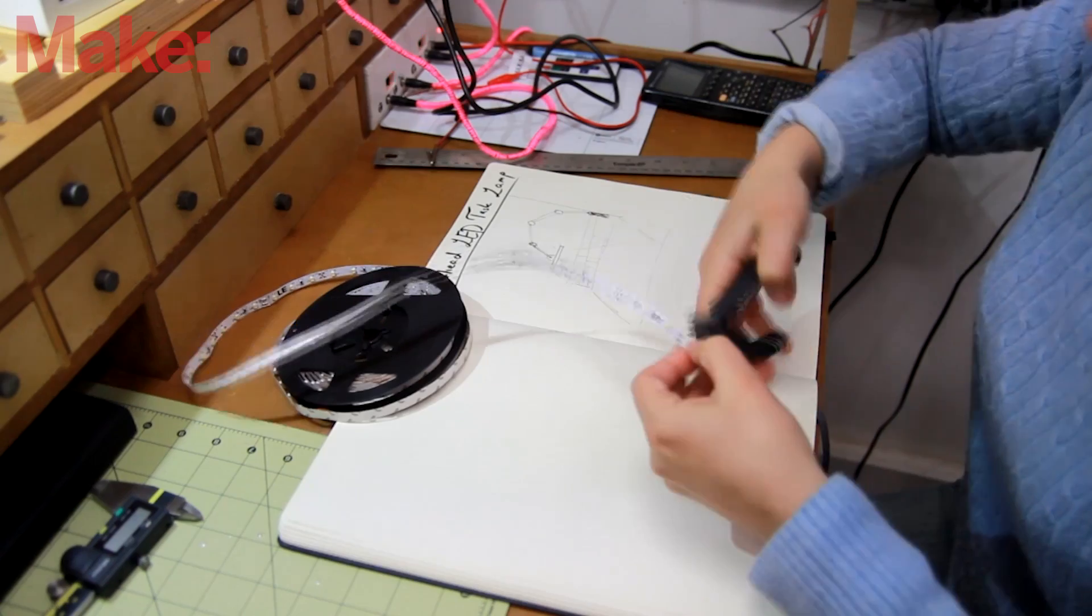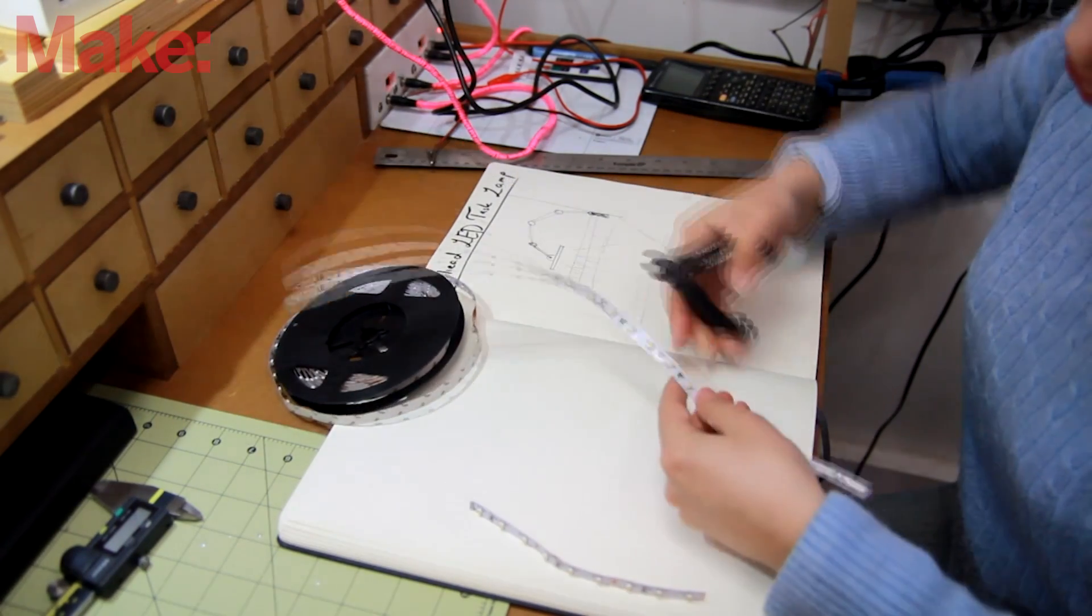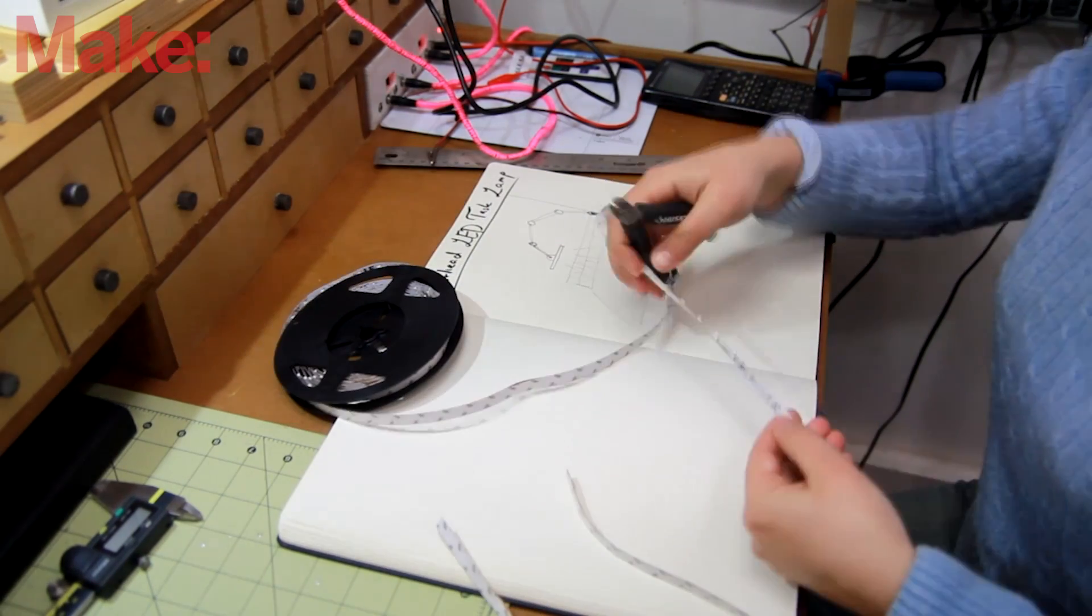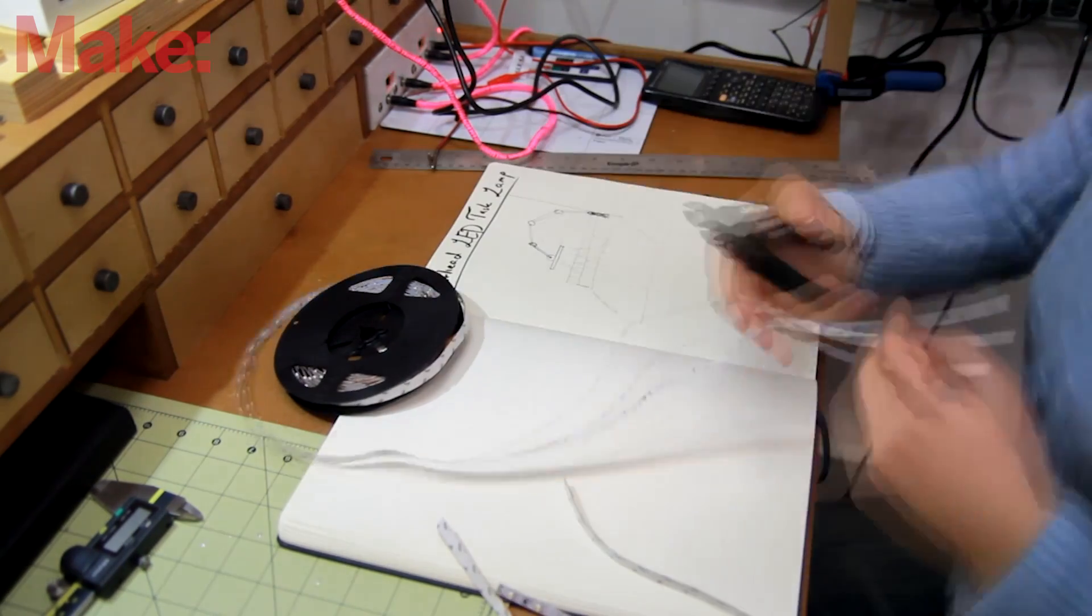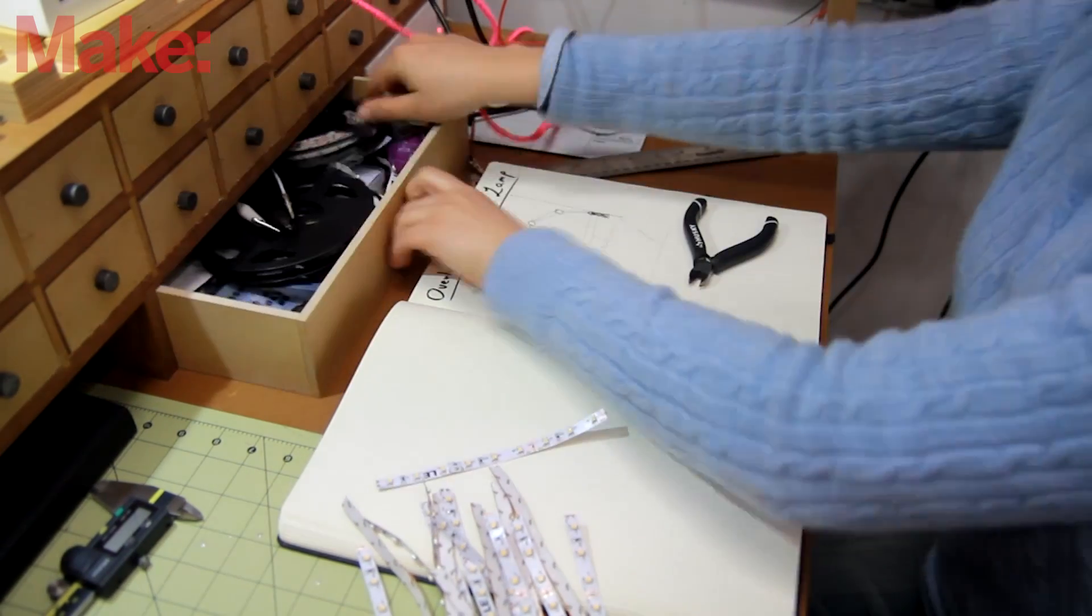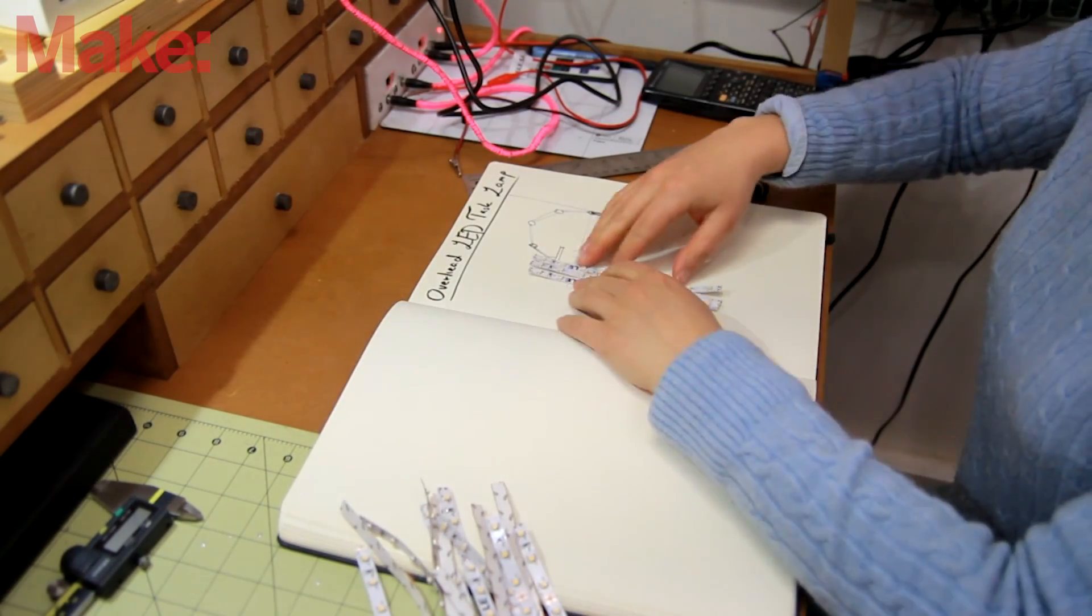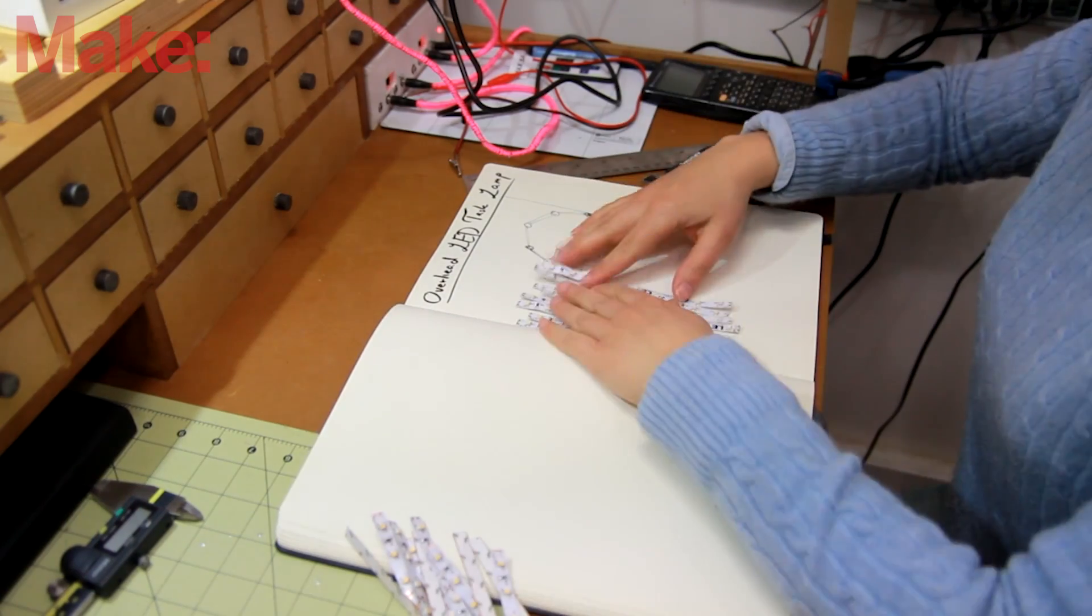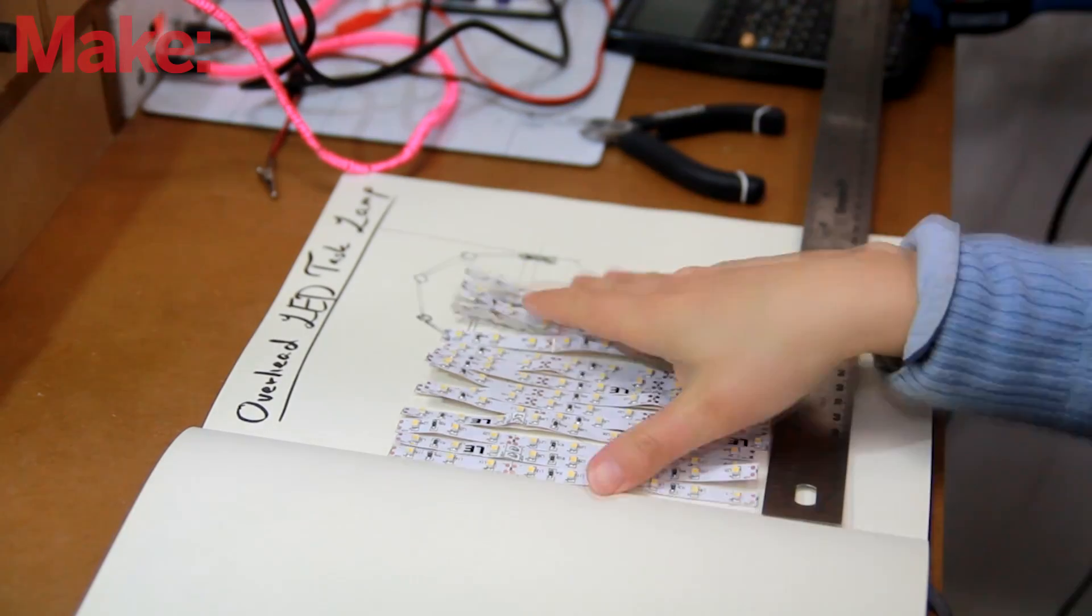I began with checking over my LED strips and measuring out how large I want the light. You can cut these LED strips every three lights on the copper section, so I decided to make my light panel nine lights wide. Then I started cutting up a whole bunch of strips, 18 to be precise, and just getting an idea of what it's going to look like.